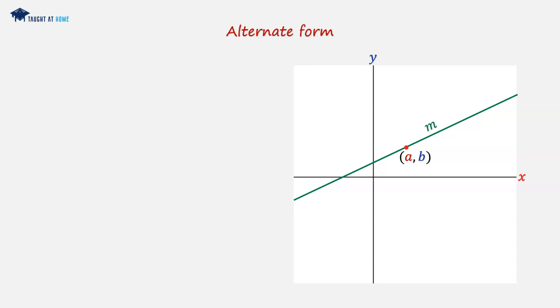We can use the alternate form to find out the equation of the straight line in its standard form, and we can use y minus b equals m times x minus a, where a and b and m are given.